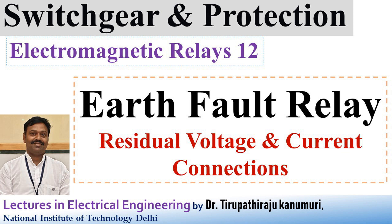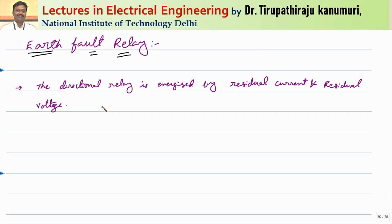Hi all, today we are going to discuss about earth fault relay connections for three-phase circuits. In order to get the earth fault relay using a single relay, it needs three separate CTs and three separate PTs. The directional relay is energized — we go for a single directional relay which is energized by a residual current and residual voltage.